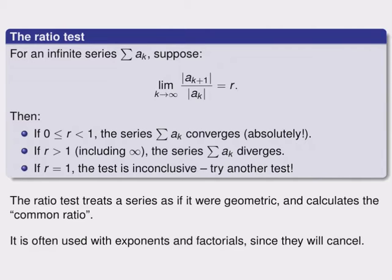The ratio test is useful because it treats a series as if it were geometric, and calculates what the common ratio would be. So of course we can use this on series that aren't geometric, but what the test does is it takes the ratio of two terms, and by taking the limit as k goes to infinity, it calculates what this ratio eventually comes out to be as the terms of the series go along. And then we can use almost exactly the same numbers as we would with a geometric series.